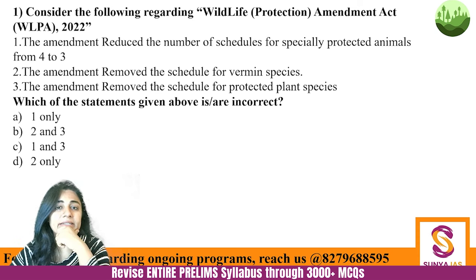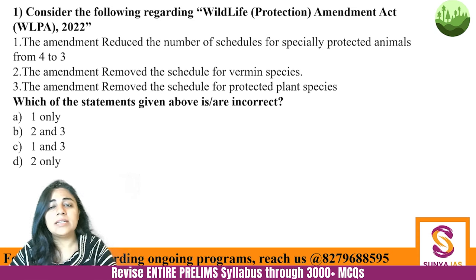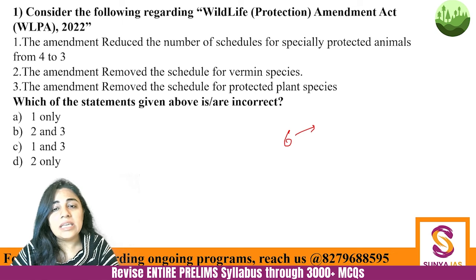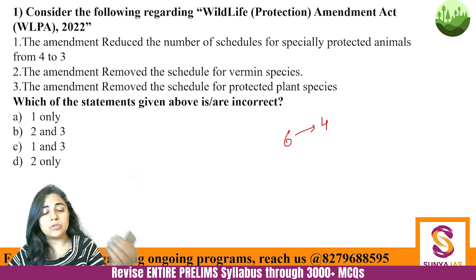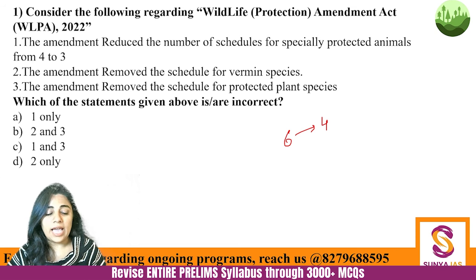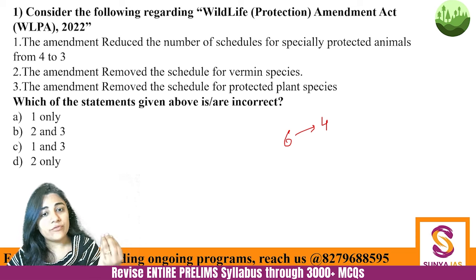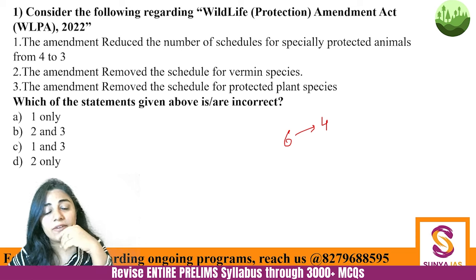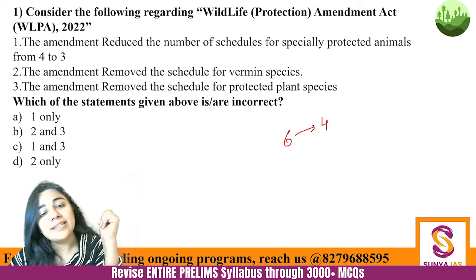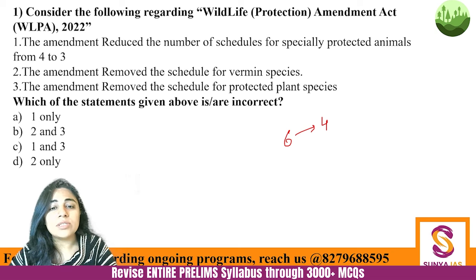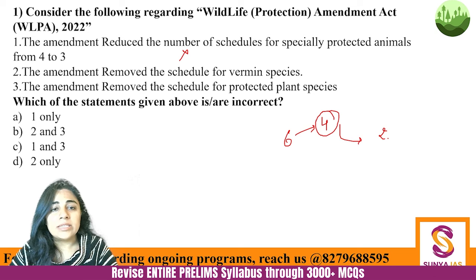In 2022, the Wildlife Protection Act was amended. Earlier there were six schedules, of which schedules one through four were repetitive — representing decreasing levels of protection for animals. Now, since every species needs protection regardless of whether it is critically endangered, the schedules for animals were reduced from four to two. So statement one is incorrect.